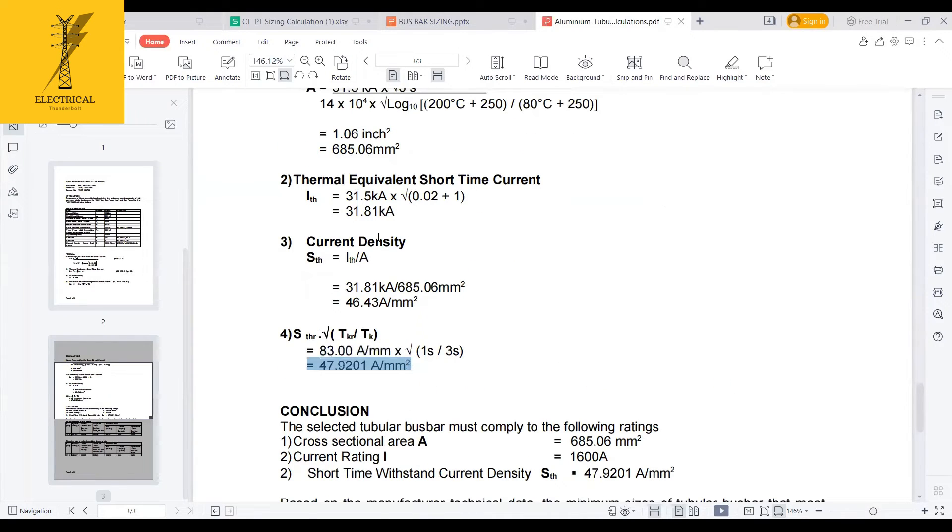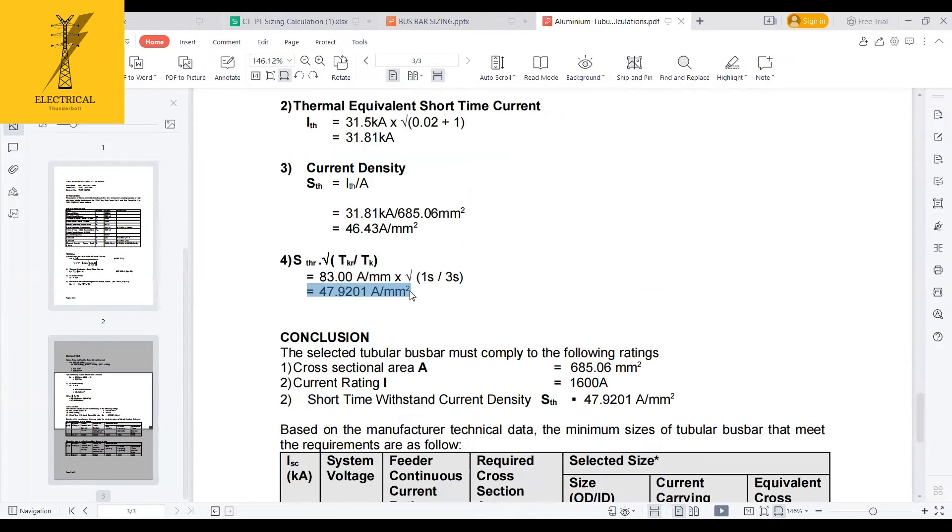But what is the current density during the short circuit? Which is 83 times 1 second by 3 seconds, which is 47. As my current density, when the fault occurred, at that time, this is the current density, which is less than my material one. Obviously, it is sufficient.